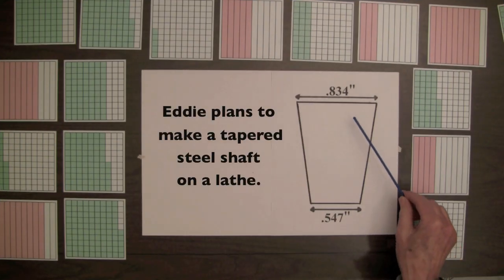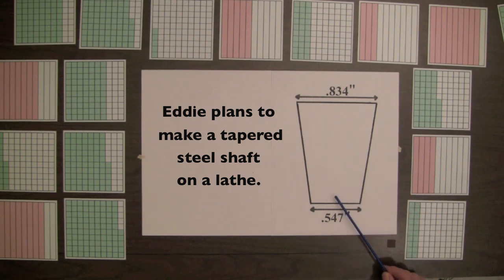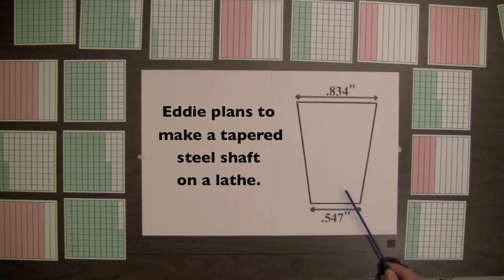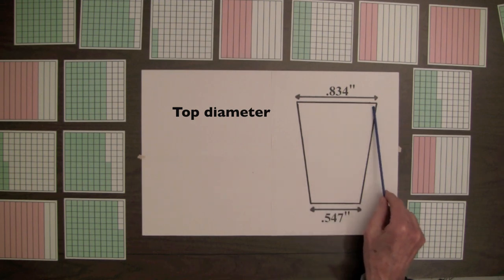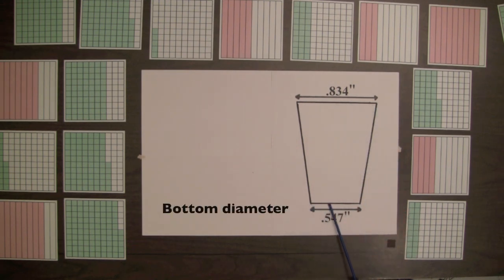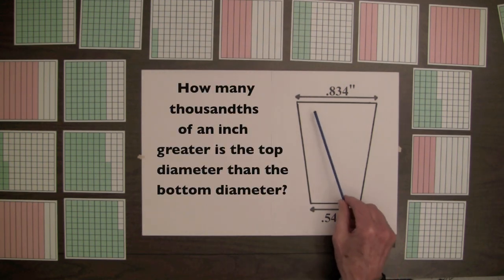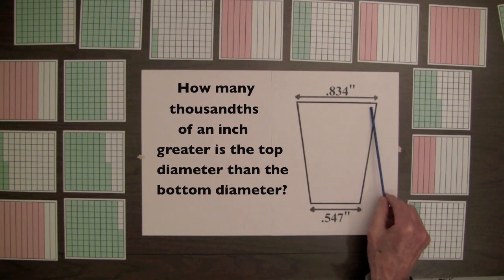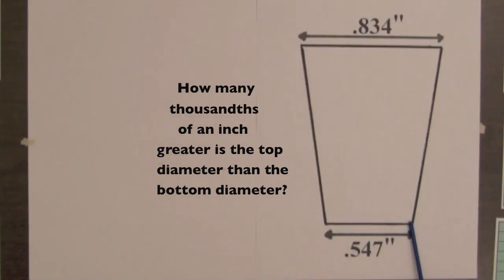Eddie plans to make a tapered steel shaft on a lathe in the school's machine shop. The top diameter is 834 thousandths of an inch and the bottom diameter is 547 thousandths of an inch. How many thousandths of an inch greater is the top diameter than the bottom diameter?